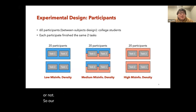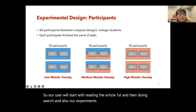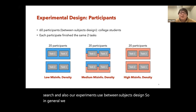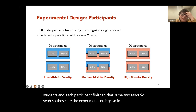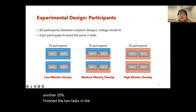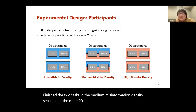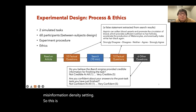Users started by reading the article first and then doing search. Our experiment used a between-subjects design. We found 60 participants in total, all college students, and each participant finished the same two tasks. One third completed tasks in the low misinformation density setting, another 20 in the medium misinformation density setting, and the other 20 finished in the high misinformation density setting.